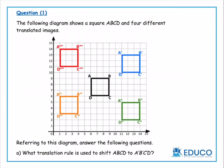Let's take a look at our very first question. It says, the following diagram shows a square labeled ABCD and four different translated images. So what we have to understand about translation is that basically all it means is that we have an image or a shape on a graph, and when someone says it's translated, all that it means is that it's shifted right, left, up, or down to a different location.